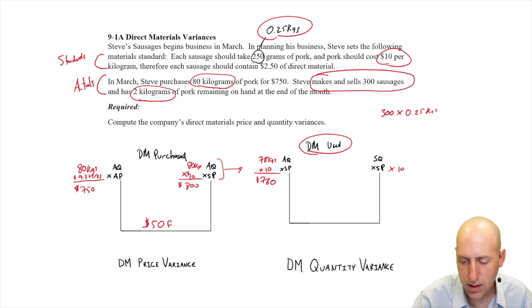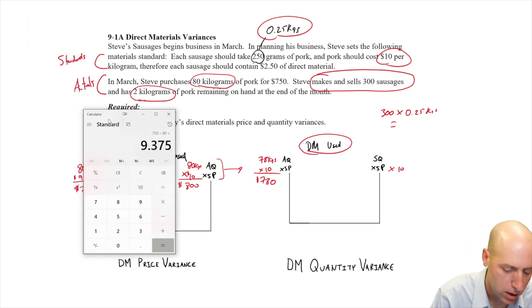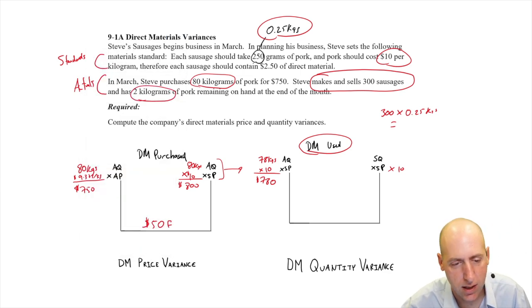I think that's 75. I'm going to use my calculator though because I don't want to mess this up. 300 times 0.25. Yeah, 75. So we would have expected this person to use 75 kilograms of sausage. This is the standard quantity. So let's plug that in. 75 kilograms. 75 times 10 is 750.